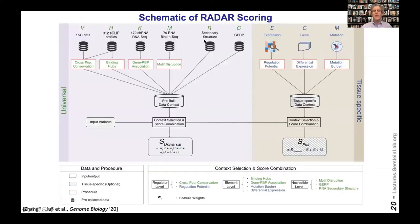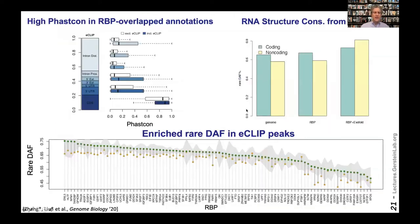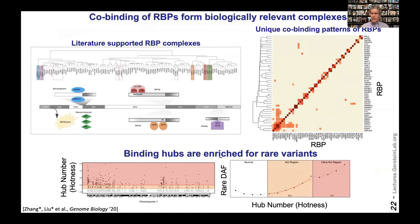We built a simple pipeline called RADAR for putting all this data together to annotate variants. We combine it with conservation data — both across organisms and within the human population. Since we're looking at RNAs, we include secondary structure. We use an entropy weighting scheme to make a combined score, and also incorporate a tissue-specific score related to the cell line context. Each binding protein site is conserved to a different degree, highlighting why conservation matters. Many binding proteins co-occur, so we more highly weight network hubs in the RNA binding protein network.